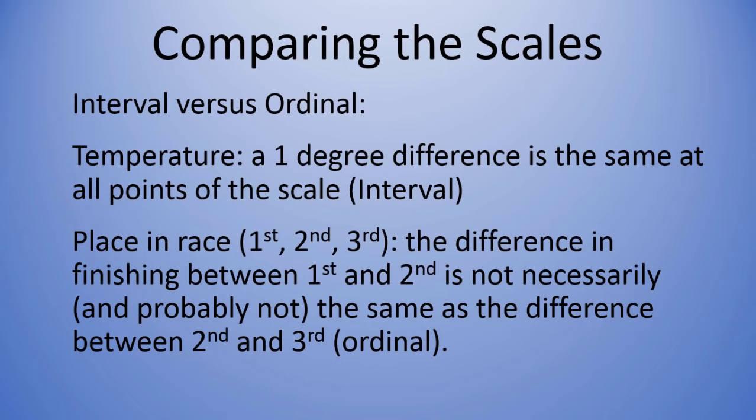Now, if we knew the time in which each of these finished, the exact time, that would be a different example. But in this example, assume all you know is someone came in first, someone came in second, and someone came in third. Those results were written down or shown in the paper, and that's all you have. In that case, if that's all you know—first, second, and third, and the names of each person—that's a classic ordinal example.